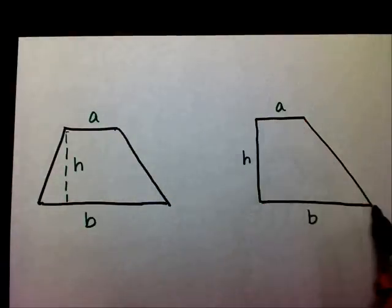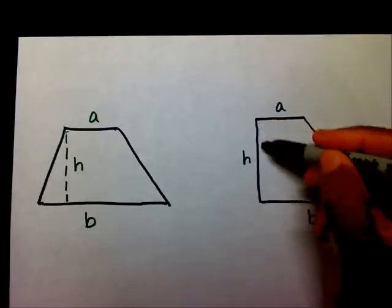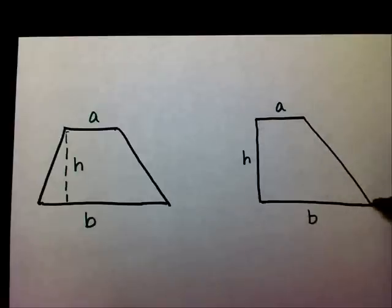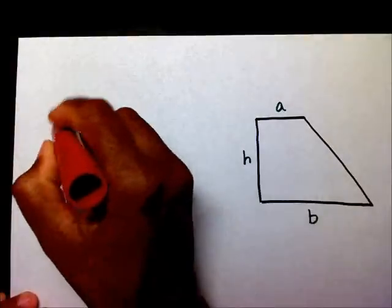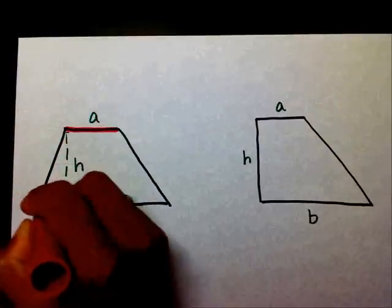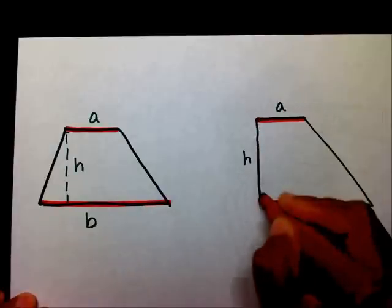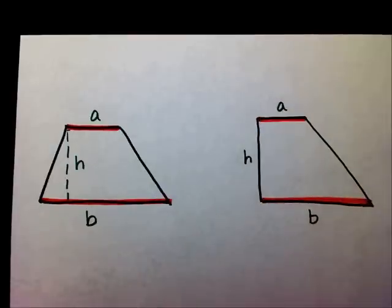This line is parallel to this line, but this line is not parallel to this line, so a trapezoid will have exactly one pair of parallel lines. Let me highlight them for you.